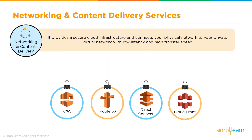Network and Content Delivery Service contributes to the infrastructure-as-a-service side of the cloud. It provides a secure cloud infrastructure and connects our physical network to our private virtual network with low latency and high transfer speeds. VPC is Virtual Private Cloud networking in the cloud. Route 53 is the DNS service. Direct Connect connects on-premises with AWS through point-to-point cables. CloudFront is a Content Delivery Network or caching service available throughout the world.